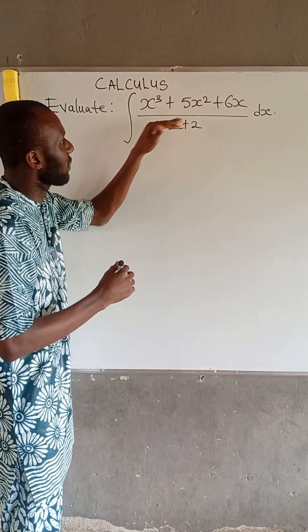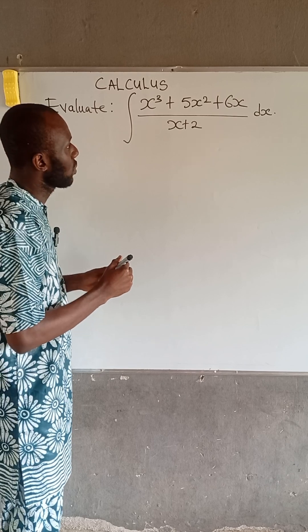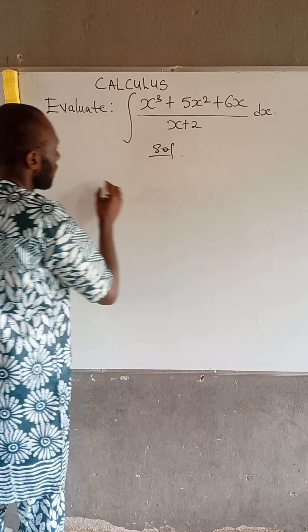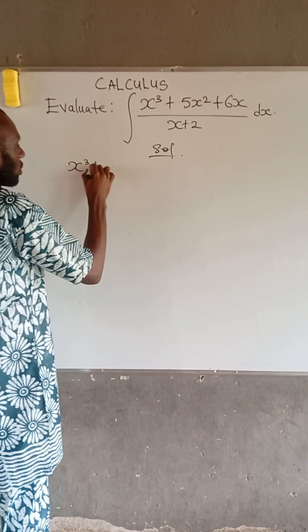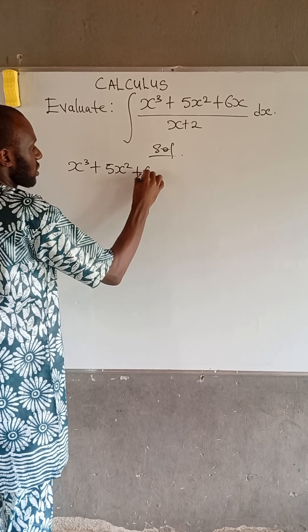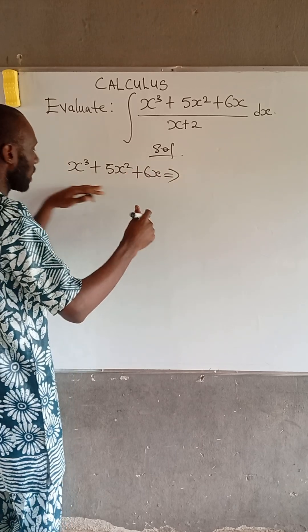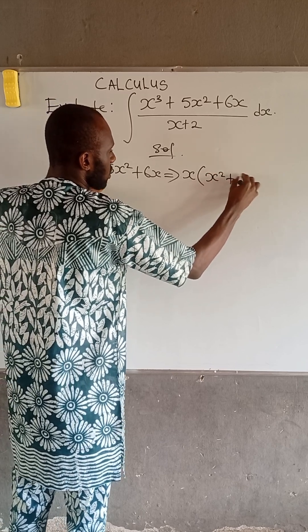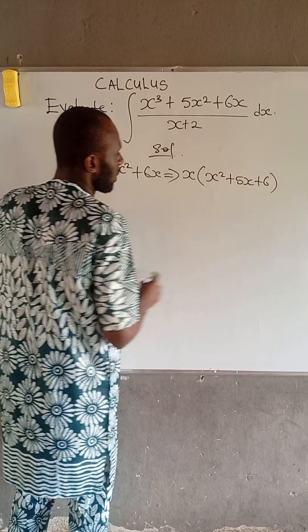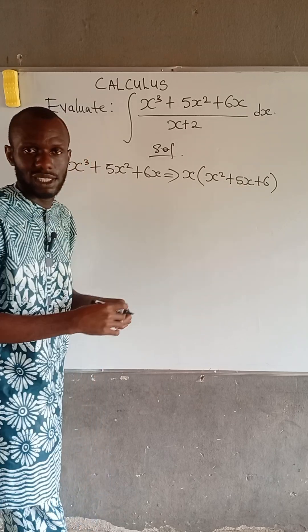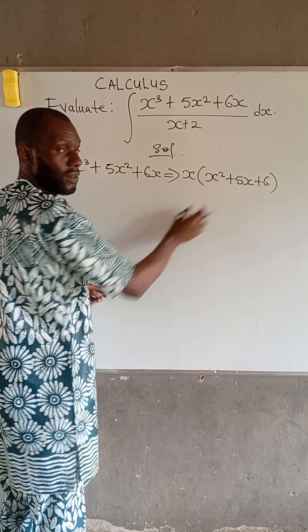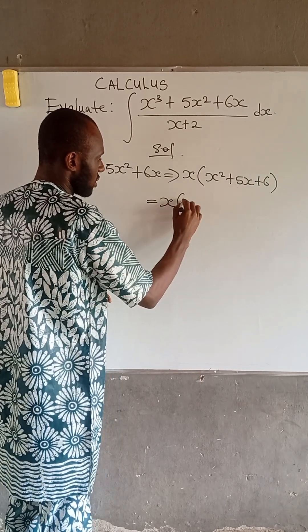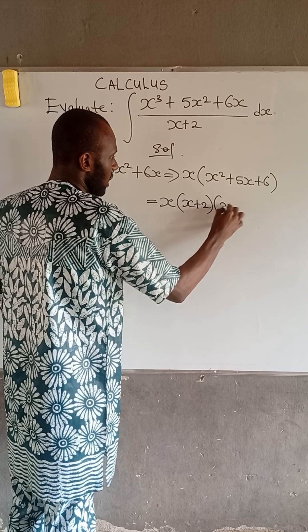The first thing we do is consider how to simplify the numerator. Looking at the numerator, we can factor out x. So we have x cubed plus 5x squared plus 6x — if we factor out x, this becomes x times open bracket x squared plus 5x plus 6. This expression is now a quadratic, so we can factorize it: this becomes x times open bracket x plus 2 multiplied by x plus 3.